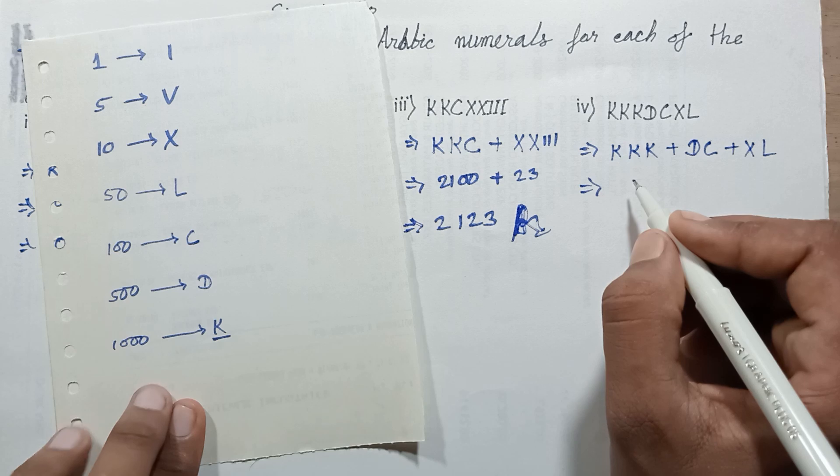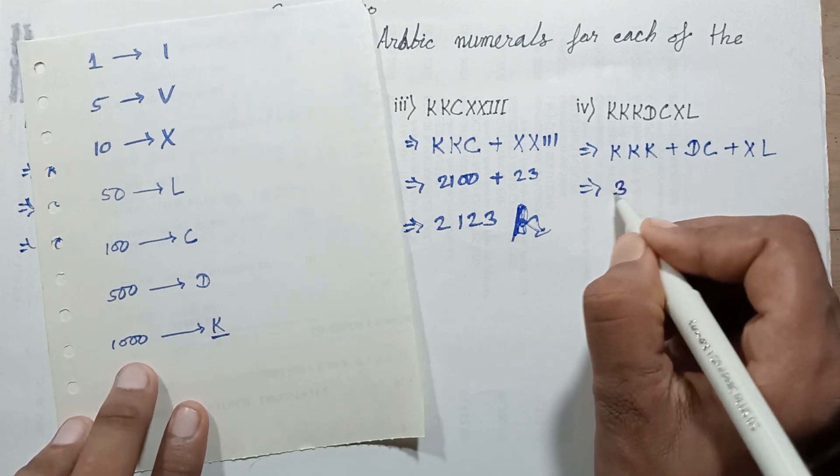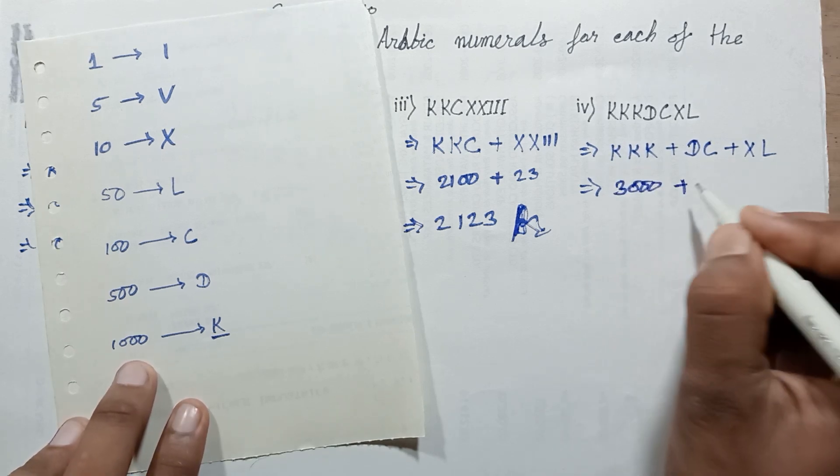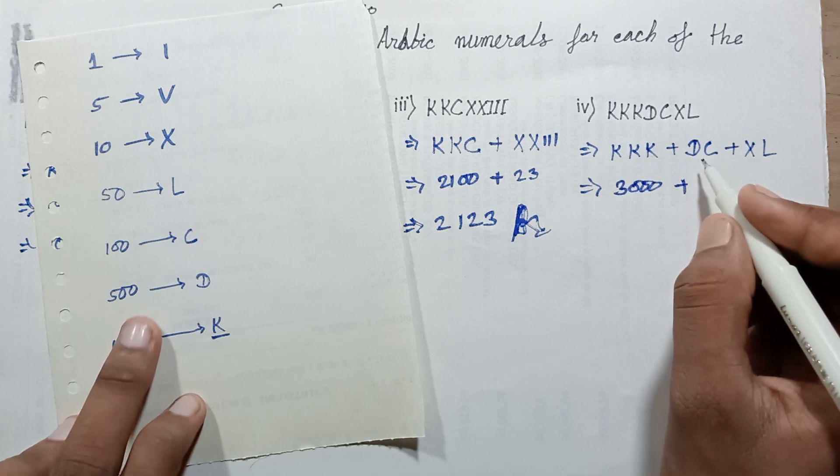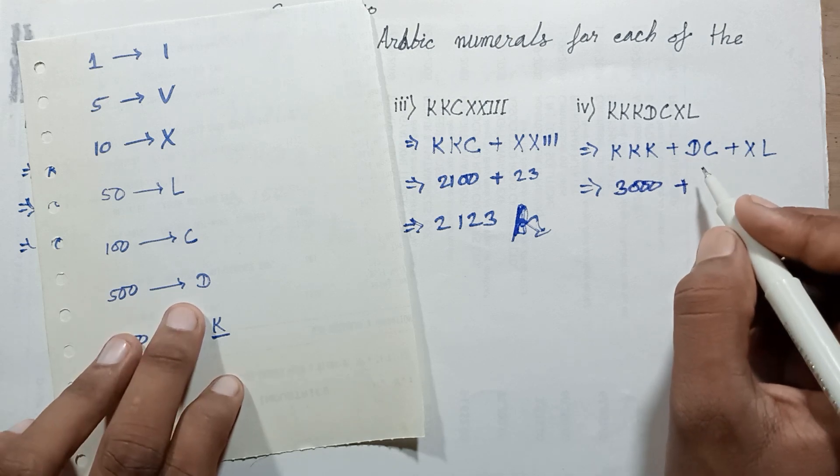This three times K represents three thousand. Three thousand, and this DC. D is five hundred, C is one hundred.